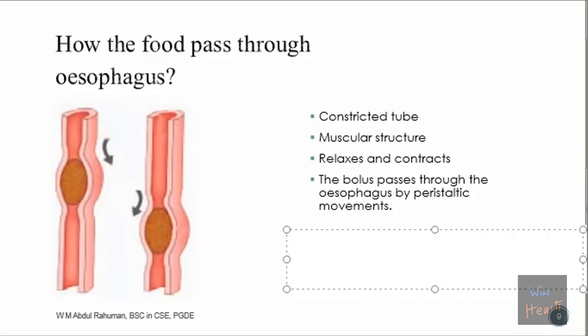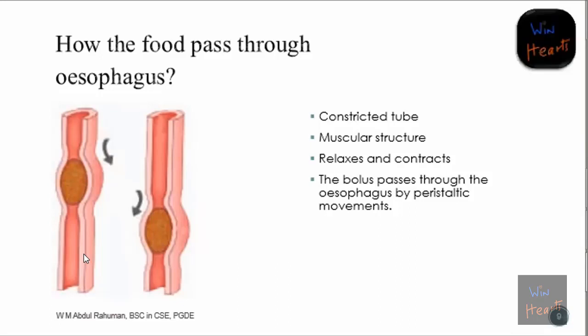The muscles inside the esophagus can relax and contract - that is a property of any muscle. Because of this rhythmic movement, food passes from the esophagus right down to the stomach. This structure is the esophagus, and this movement is known as peristaltic movement - the rhythmic contraction and relaxation is called peristaltic movement.